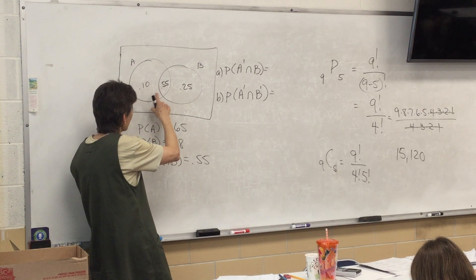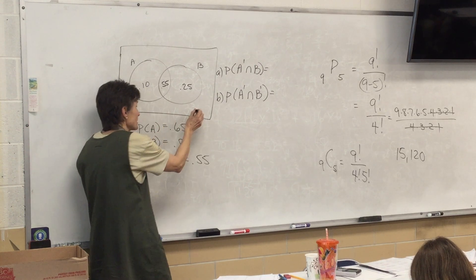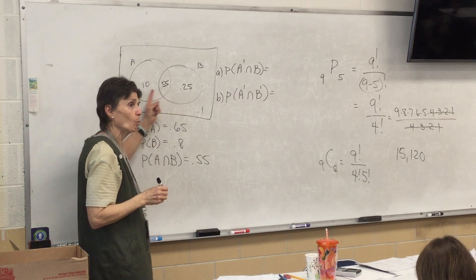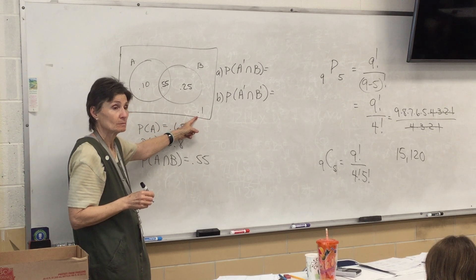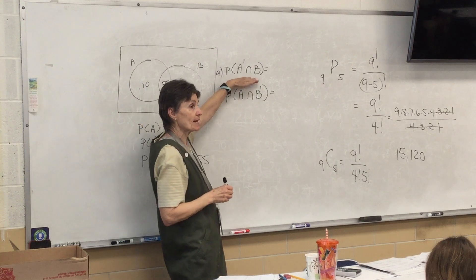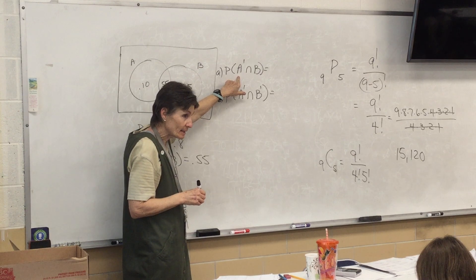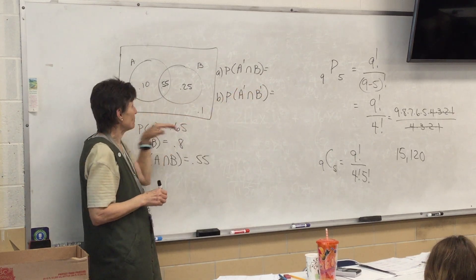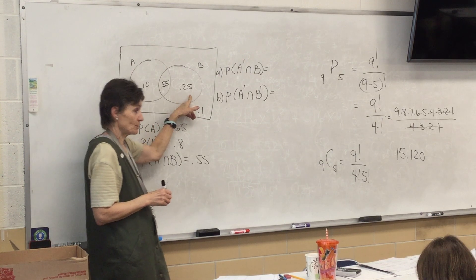So let's see, these add up to 0.9. So this is going to be a, what, 0.1? What if these added up to one? Then that would be a zero. All right, so what does this say? This says find the probability of not being in A, but being in B. So I'm in B, but I'm not in A. What's the answer? 0.25.